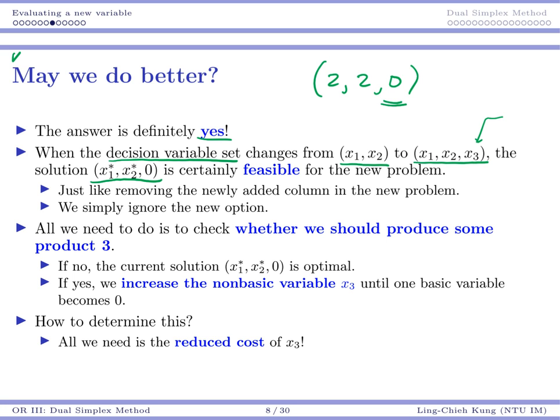So our original optimal solution is definitely a new candidate for your new optimal solution. So this may serve as an initial searching point, an initial basic feasible solution in some sense. So what we are trying to do is that, now if we have this option, which still ignores the new option, then all we need to do is to consider whether we want to add this new option.